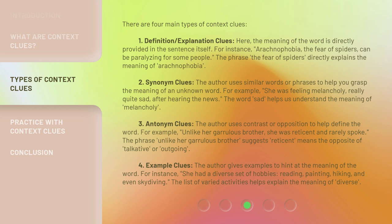3. Antonym clues — the author uses contrast or opposition to help define the word. For example: "Unlike her garrulous brother, she was reticent and rarely spoke."